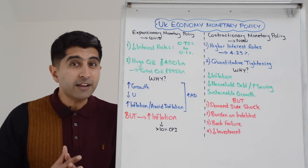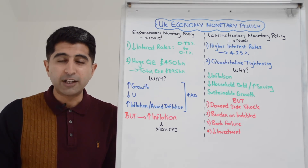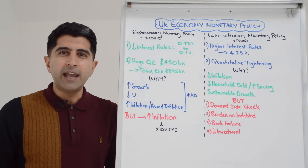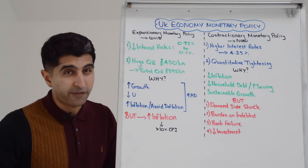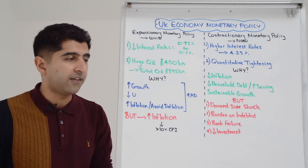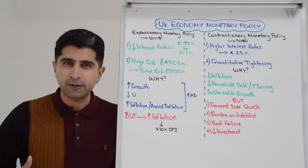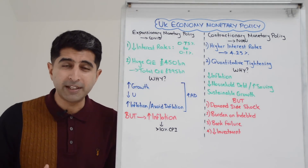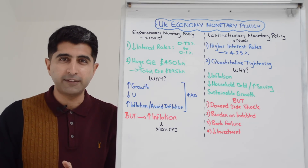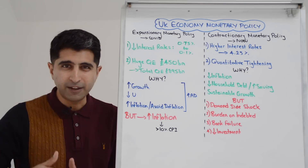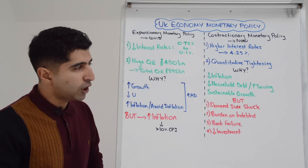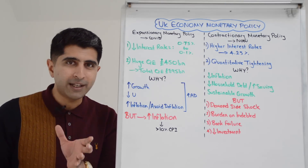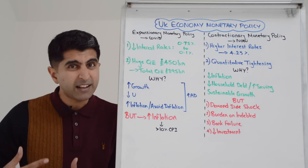We saw pretty strong recovery in the UK — around 7% growth in 2021 and 4% growth in 2022, one of the strongest recoveries in the world. You could argue that, together with expansionary fiscal policy, these policies had a part to play in that. Unemployment didn't spike too badly — a 5.4% spike is not as bad as it could have been. And we didn't get deflation; we got close to it but didn't actually get there. So you could argue relative success.